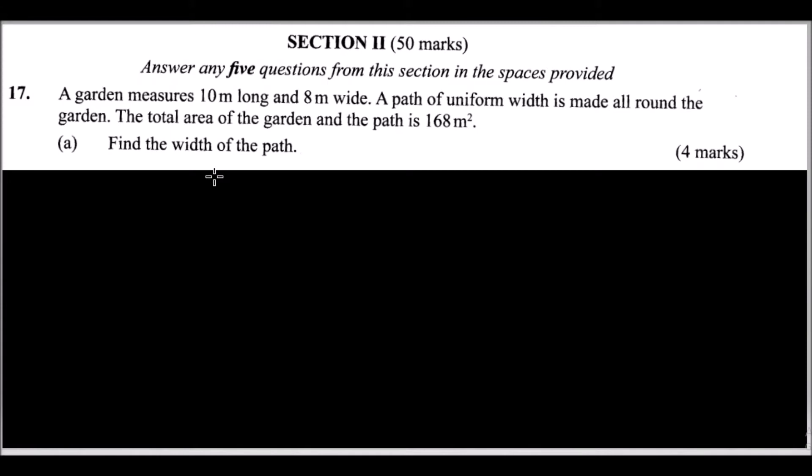So let's look at this question. A garden measures 10 meters long and 8 meters wide. A path of uniform width is made all around the garden. The total area of the garden and the path is 168 square meters. Find the width of the path. To approach this question, you can make a sketch of what has been described.